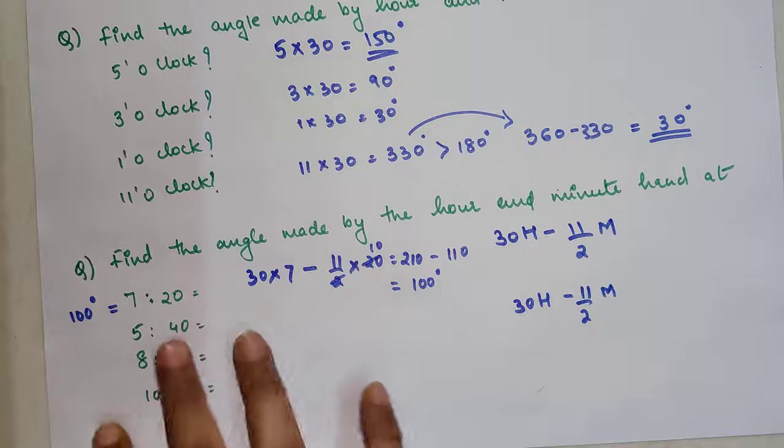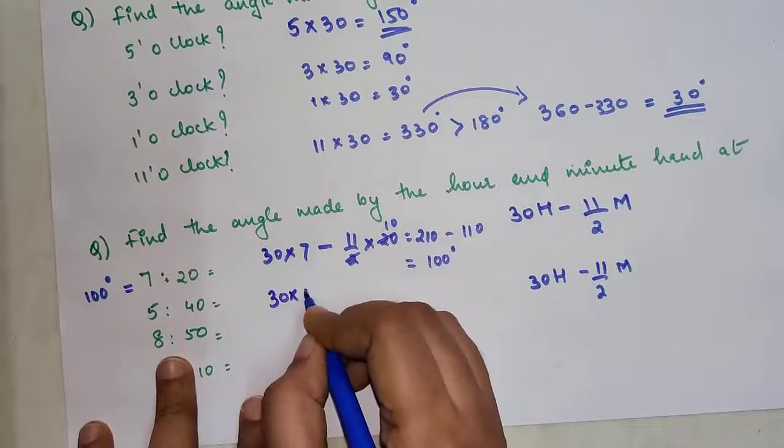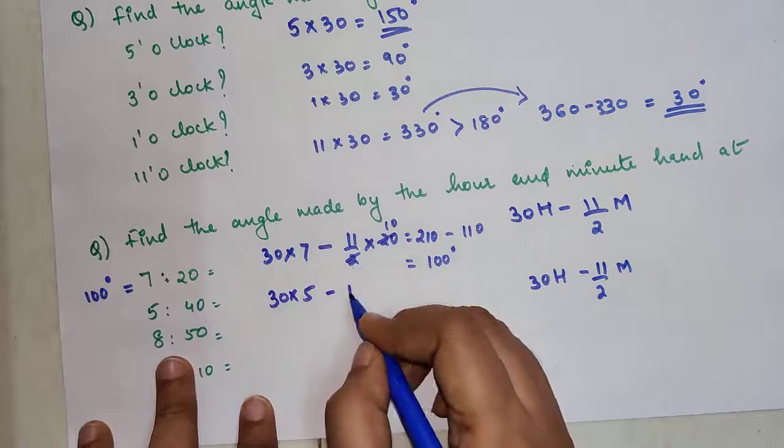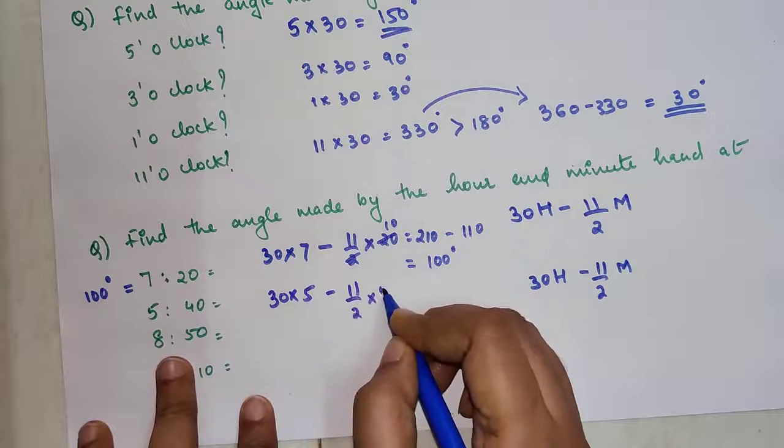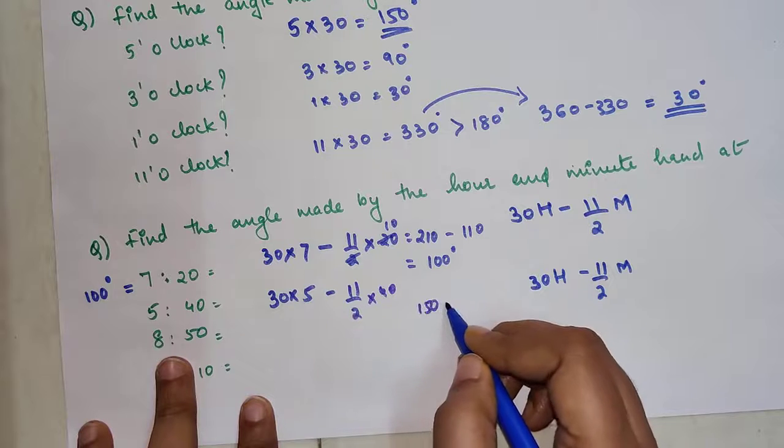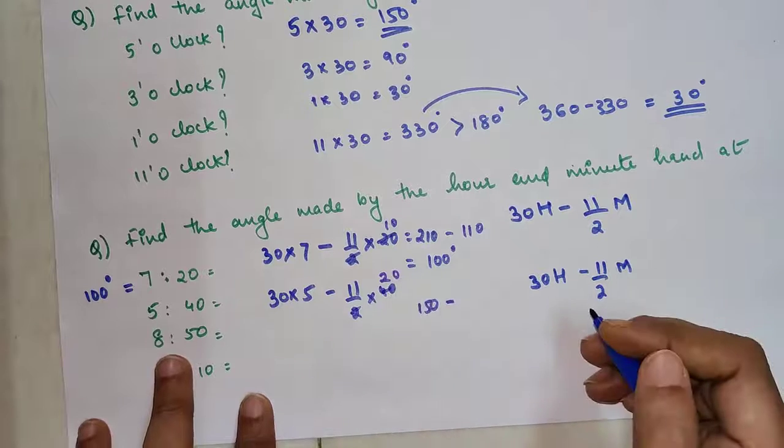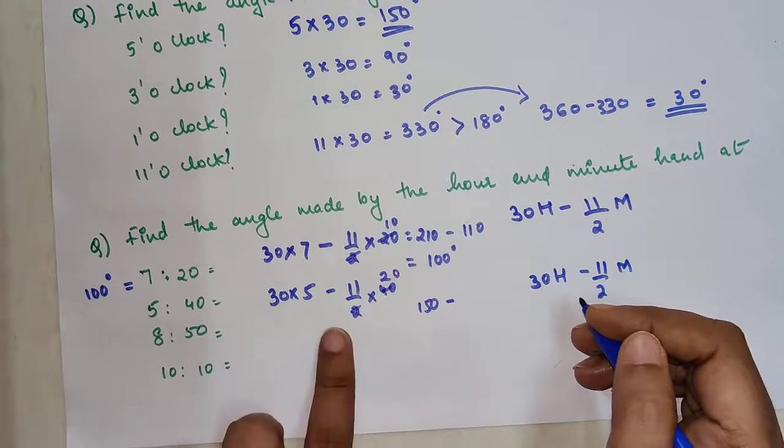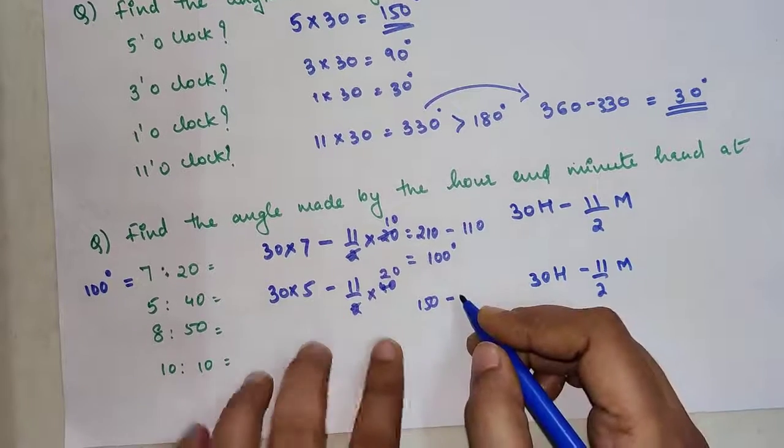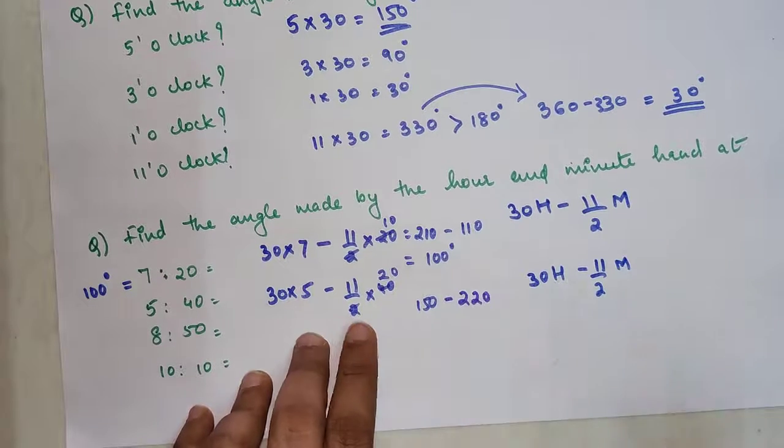So now simply over here we again multiply 30 into 5 minus 11 upon 2 into 40. So basically this becomes 150 minus this is 20, right? So this becomes 11 into 20 gets you minus 220. So here in that case, what is your answer? Your answer is now coming out to be negative.